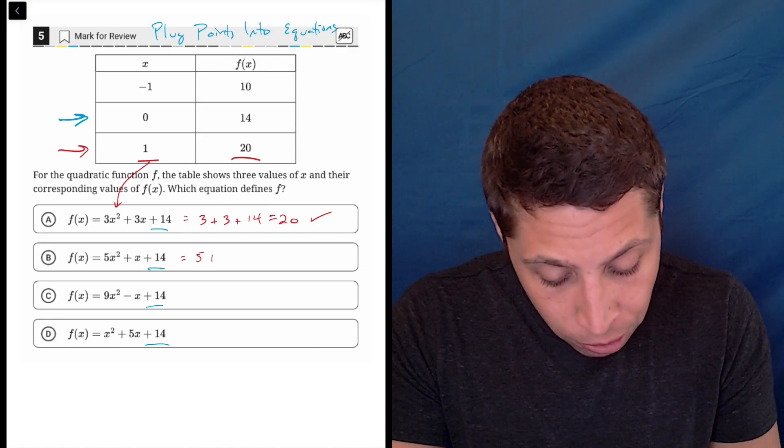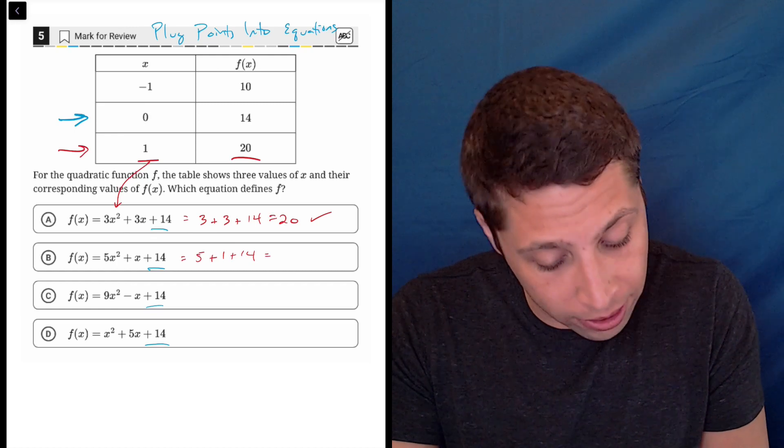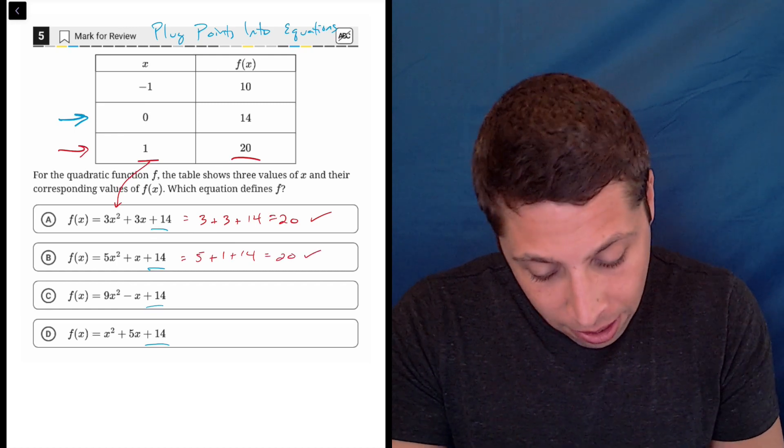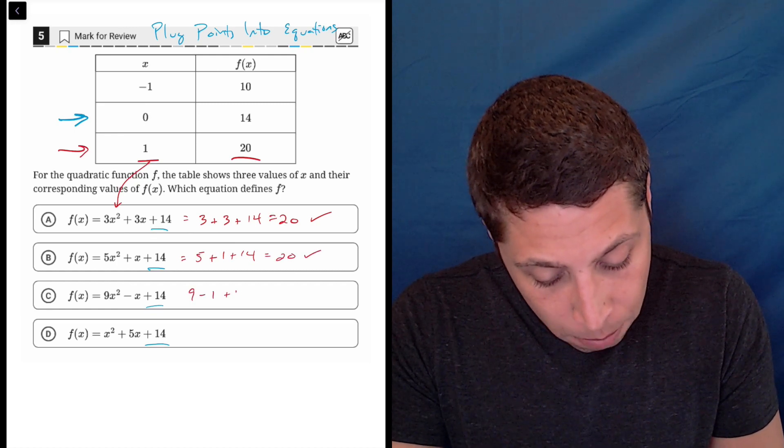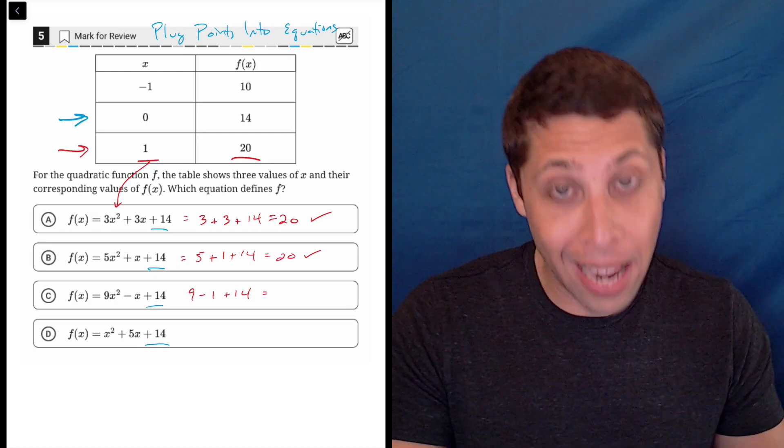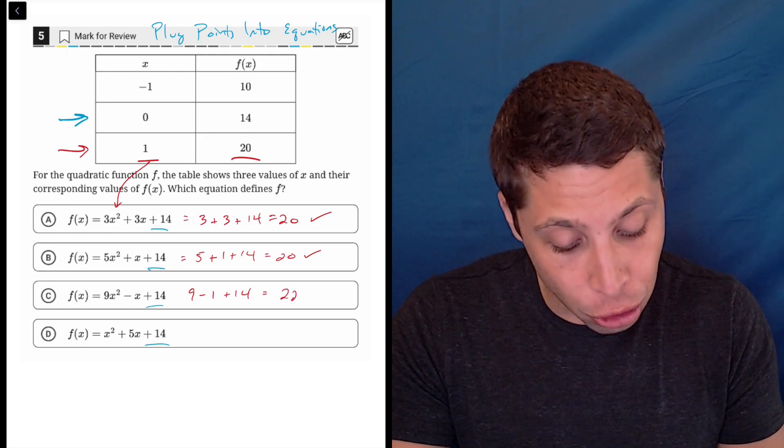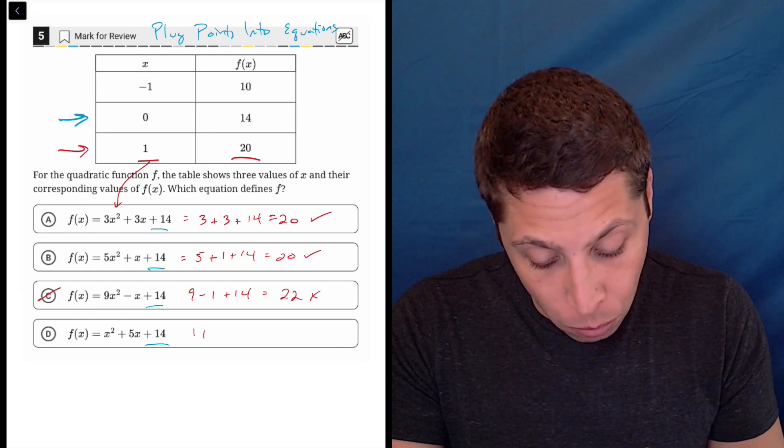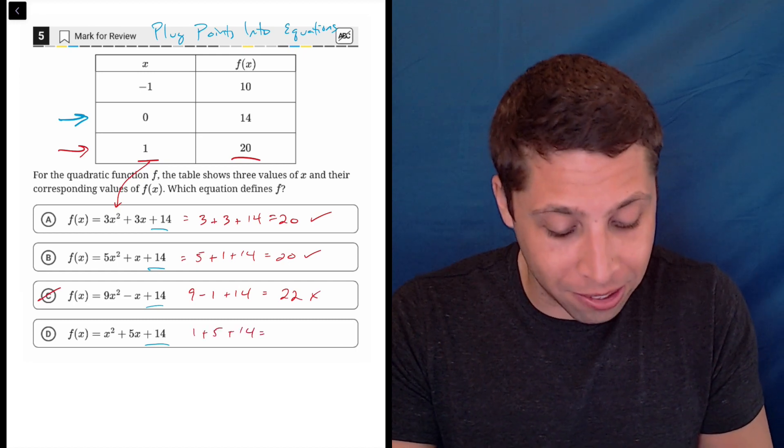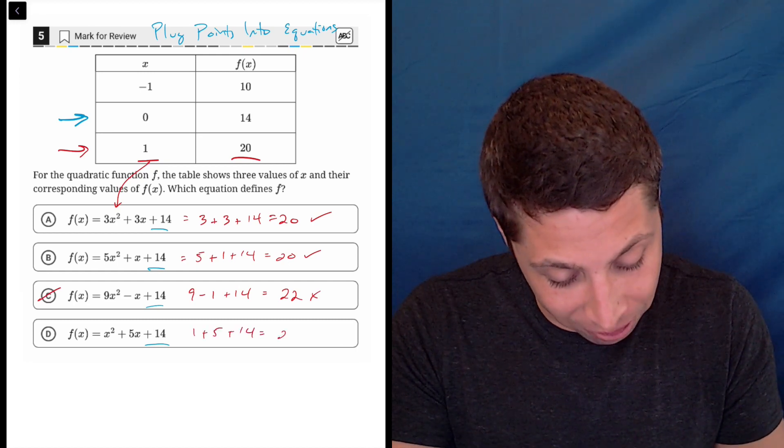So let's just continue. This would be five plus one plus 14. That's also 20. So there you go. This would be nine minus one plus 14. So nine minus one is eight. Eight plus 14 is 22. So that does not work. And then D would be one plus five plus 14. So there you go. That works too. So that's also 20.